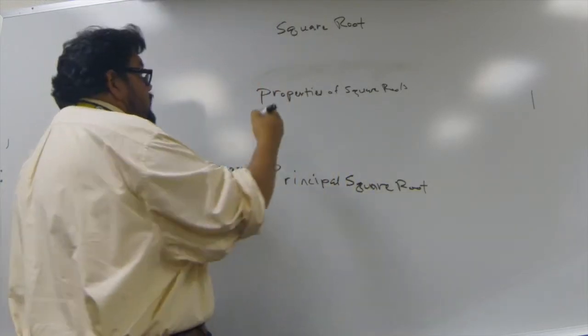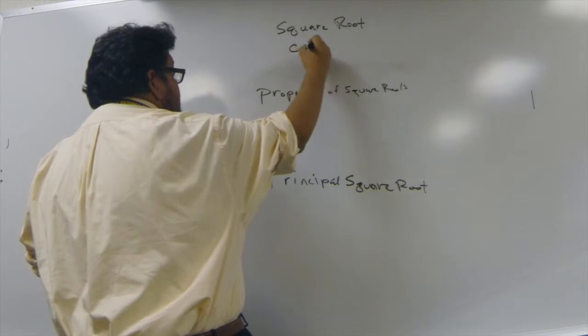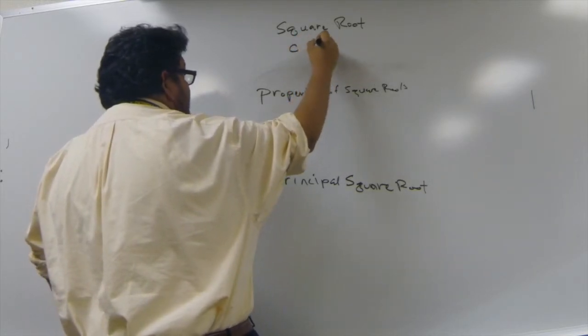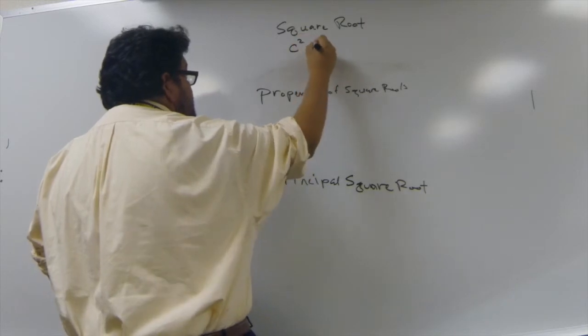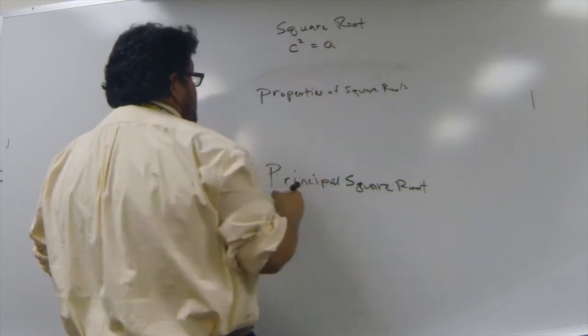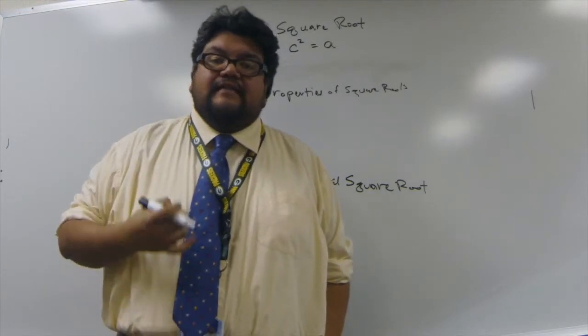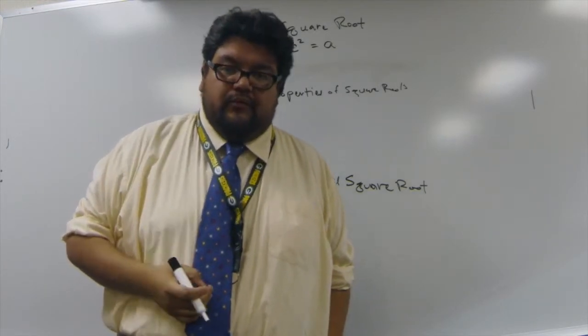So first is square roots. Any number C is a square root of A if C squared equals A. So C times C is A, then C is called the square root of A.